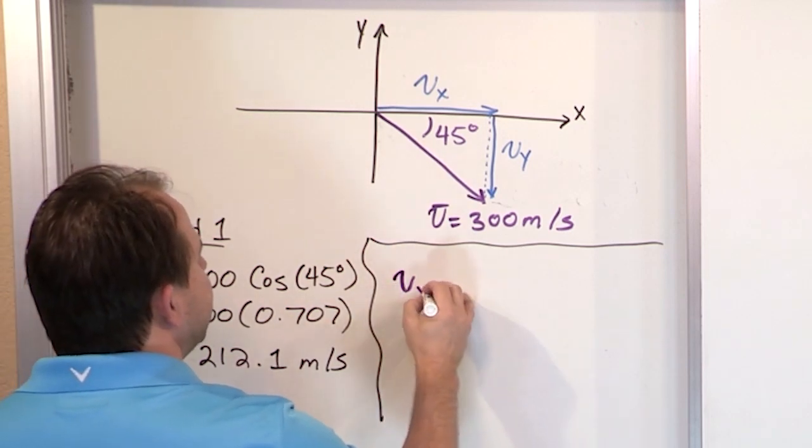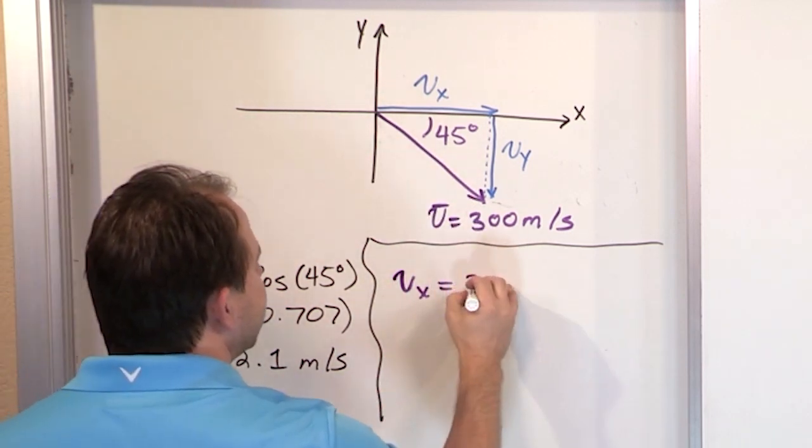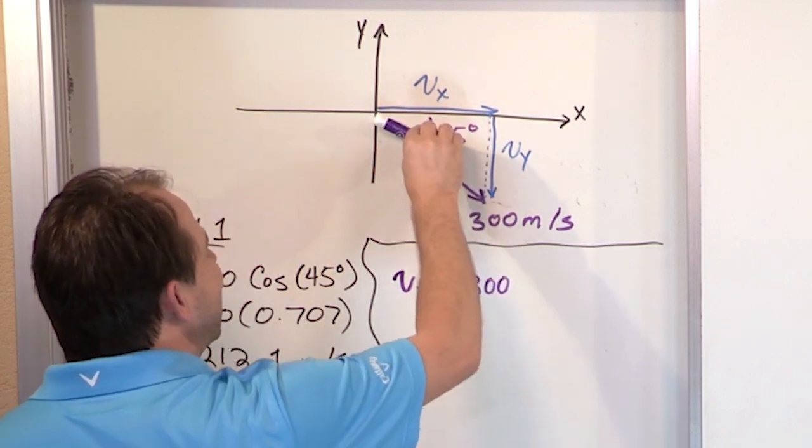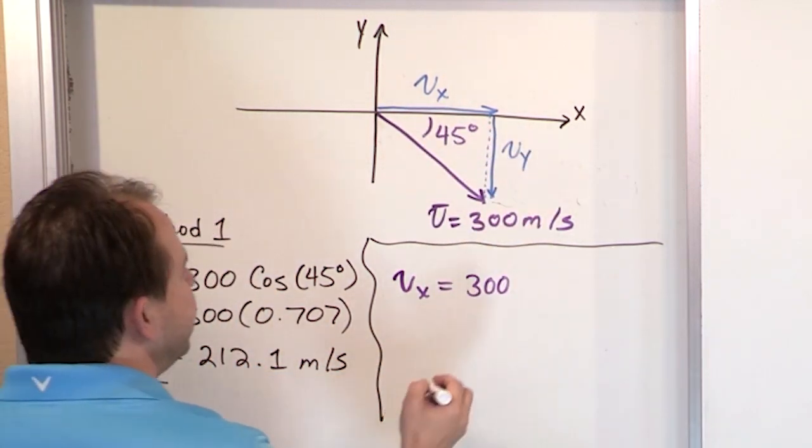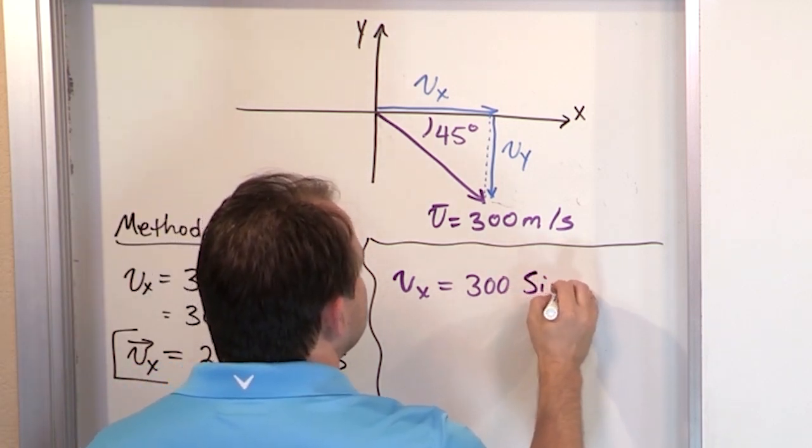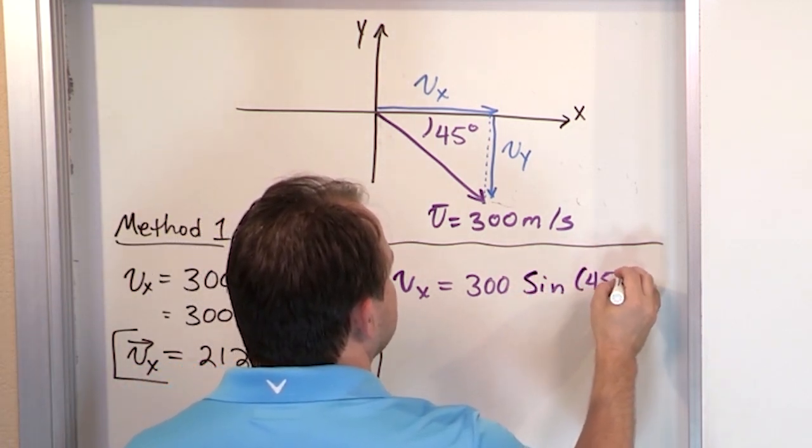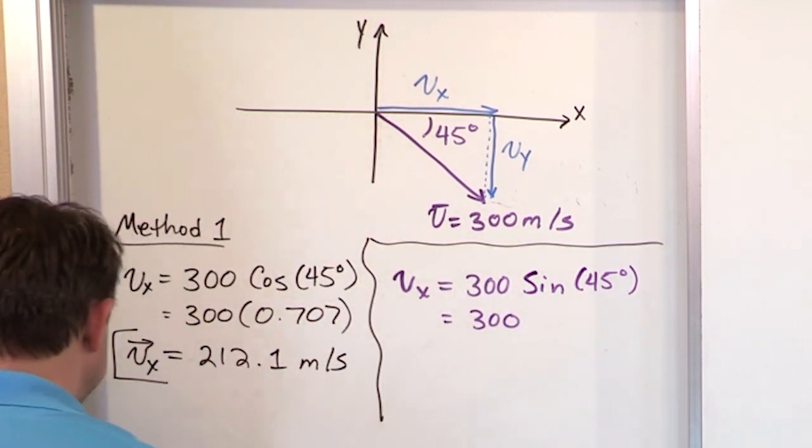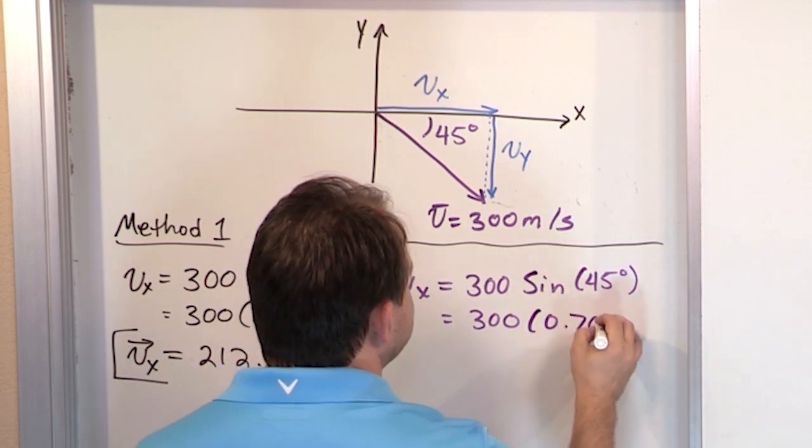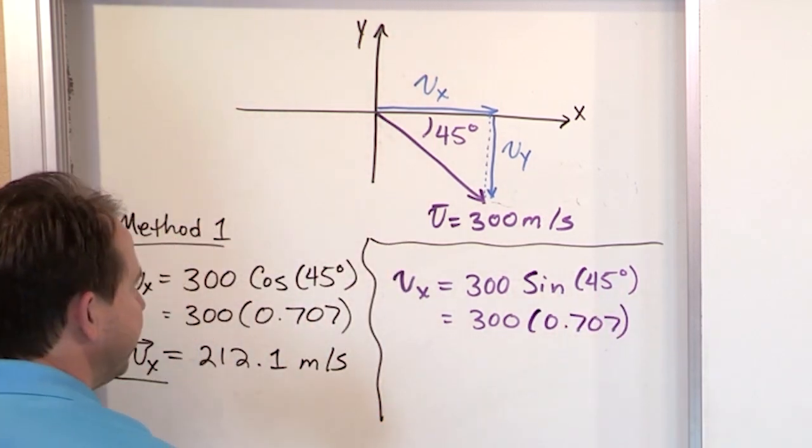Now let's move over here and find the vy component. So to find vy, it's going to be the same exact hypotenuse, 300. But the sine of this angle, the opposite here is going to be the sine, which is going to give me vy. So it's going to be the sine of 45 degrees. So when I go in here, 300, what is the sine of 45 degrees? If you stick that in your calculator, you're going to get 0.707. Same thing as before. That's what the calculator gives you.